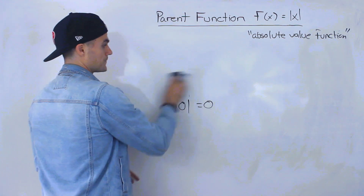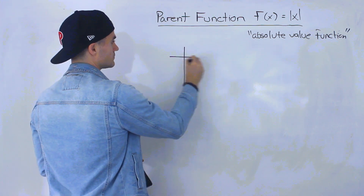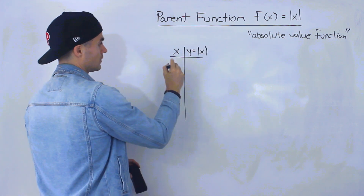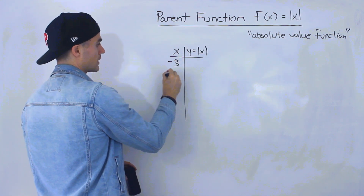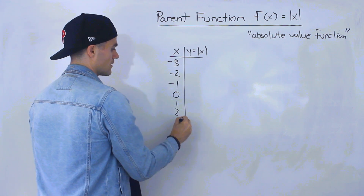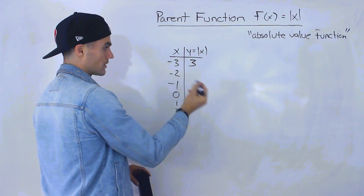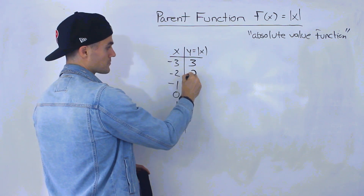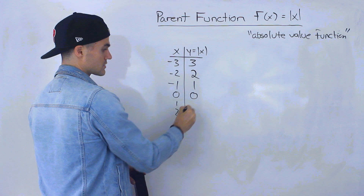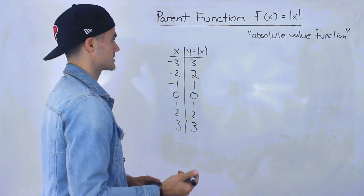So if we make a table of values to see how this absolute value function is going to look, let's go from negative three, negative two, negative one, zero, one, two, three. Notice the absolute value of negative three — we just said that's equal to positive three. Absolute value of negative two is positive two, then one, zero. And then these are just going to stay the same — they stay as is.